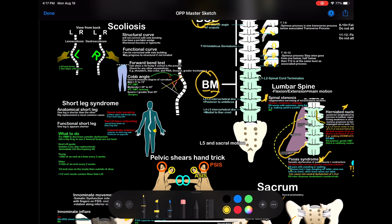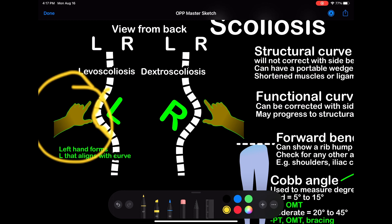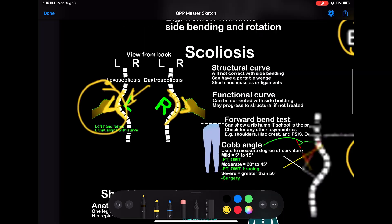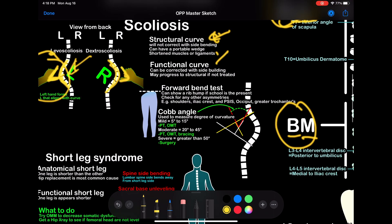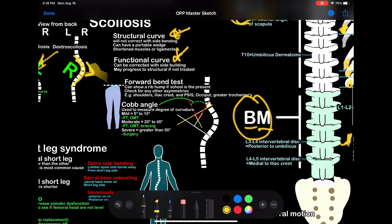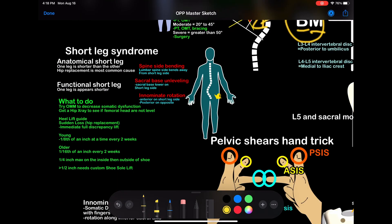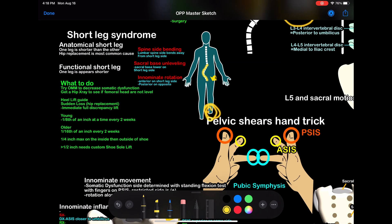Scoliosis — holding up your hands. If your left hand goes with a curve, you know it's levoscoliosis — left, levo. If your right hand goes with the curve, then you know it's dextroscoliosis. Really easy way to figure out what kind of curve it is. Then you have structural curve versus a functional curve, the forward bend test, Cobb angle, and short leg syndrome. The lumbar spine side bends away from the short leg, and you have an anatomical short leg versus a functional short leg.